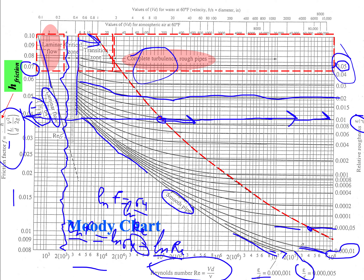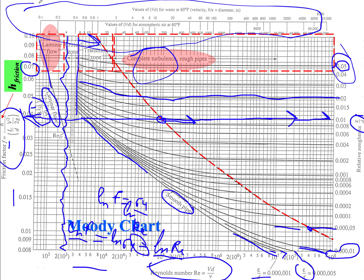The Moody chart is sold in engineering handbooks — you always have it available. There is also an alternative axis on top for practicing engineers working with water, where kinematic viscosity is already incorporated so you just plot V·D directly, making it easier to get a quick estimate of friction factor.